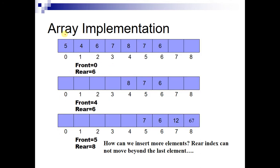Here is an array. At start, front is here because five came first, then came four, then came six, then came seven, then came eight, then came seven and then came six. The rear pointer, the rear index, will be here. Whenever a new entry will come we will increment the rear index. So if 12 comes and 67 comes, rear will reach here.